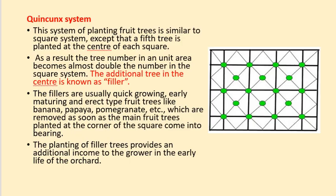Next is the quincunx system of planting. This system is similar to the square system, except that a fifth tree is planted at the center of each square. As a result, the number of trees per unit area becomes almost double that of the square system. The additional tree in the center is known as a filler. Fillers are usually quick-growing, early-maturing, and erect type fruit trees like banana, papaya, and pomegranate, which are removed as soon as the main fruit trees planted at the corners of the square come into bearing. Planting filler trees provides additional income to the grower in the early life of the orchard.